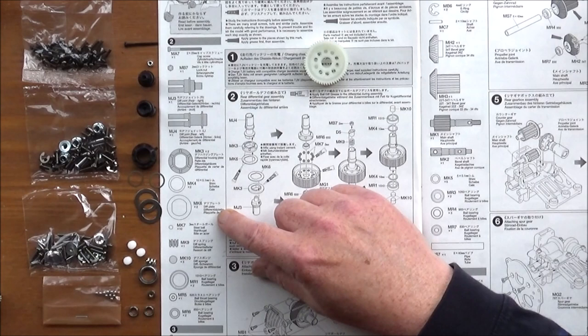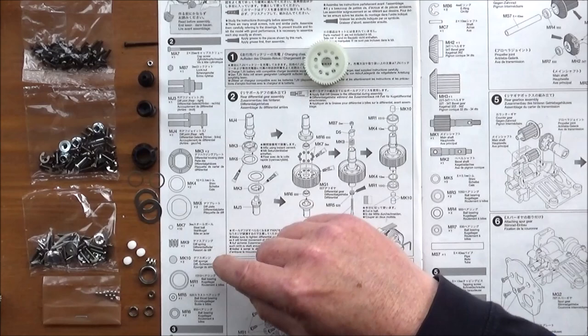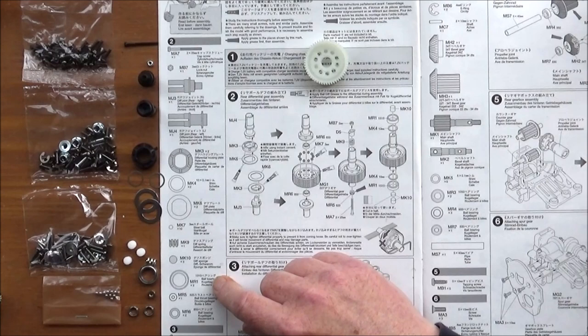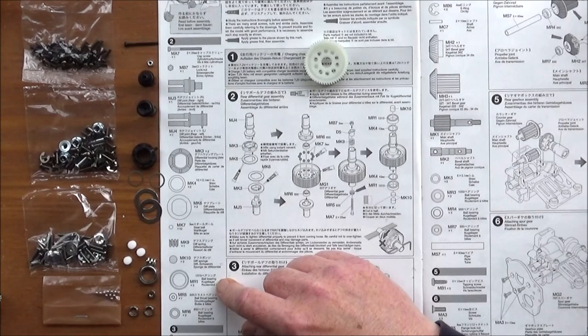Ten off of MK7, 3mm ball bearings. One off of MK9, diff spring. Three off of MK10, diff sponge. Two off, and I've only got one there, but hey, I can get that in a bit. MR1, which is 15x10 ball bearing.